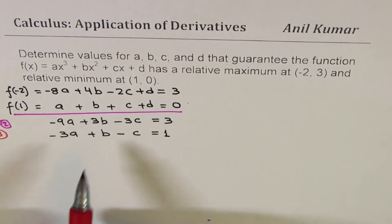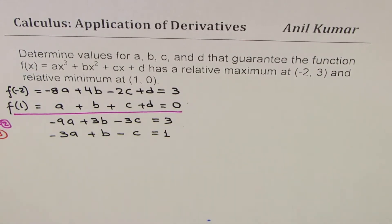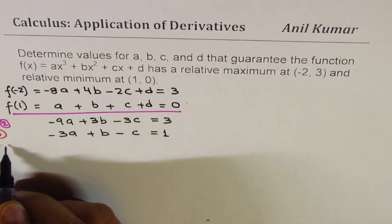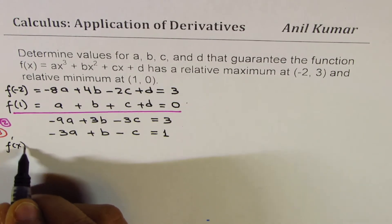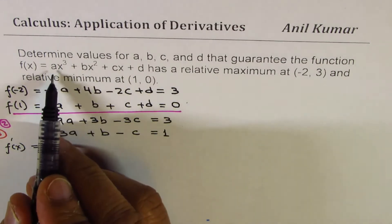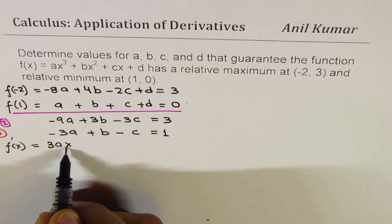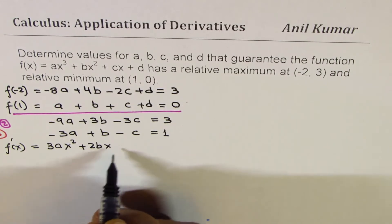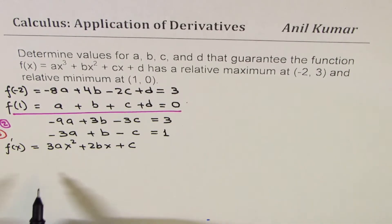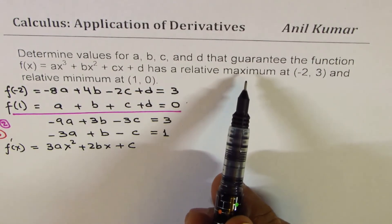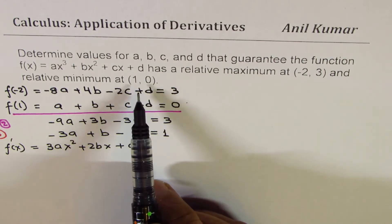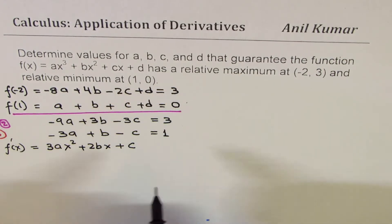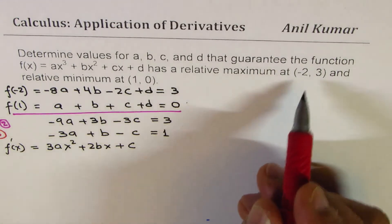Now let's look into the derivative of the function. f'(x) = 3ax² + 2bx + c. Now we know that there is a maximum and there is a minimum. That means the derivative should be equal to 0. So those are our critical numbers.